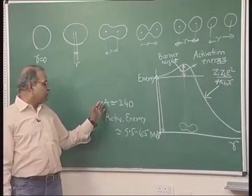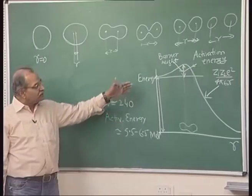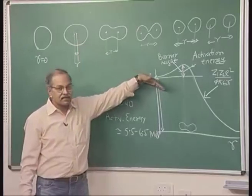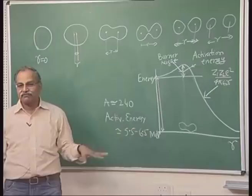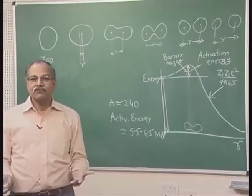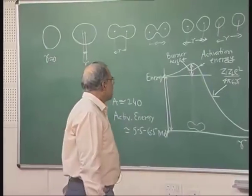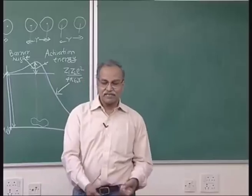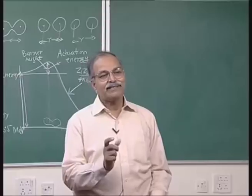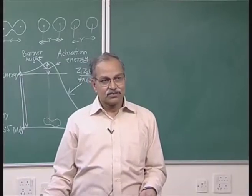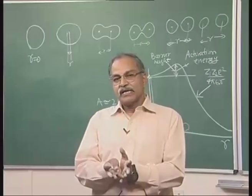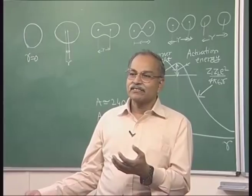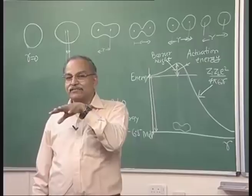For much larger values of A, there is no barrier — from the very beginning, as the nucleus starts deforming, the energy starts decreasing. In that case, those nuclei would spontaneously fission. We can work out that condition: like an unstable equilibrium, if disturbed slightly, that triggers larger disturbance and it falls. For very large nuclei in a spherical shape, a slight deformation immediately leads to energy decrease, with no increase before the decrease — no barrier.